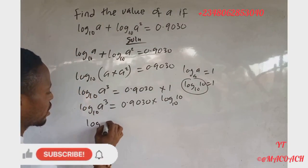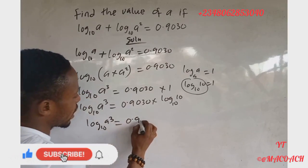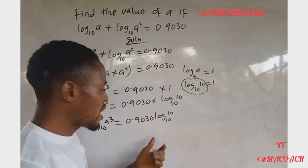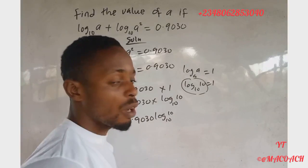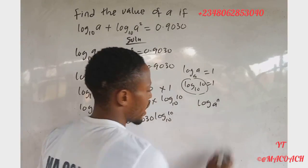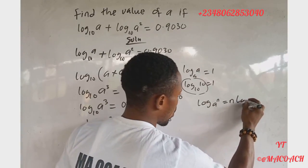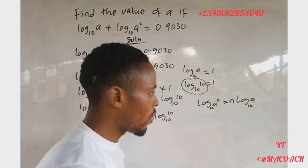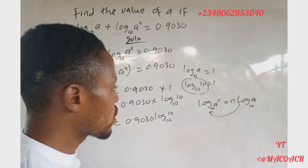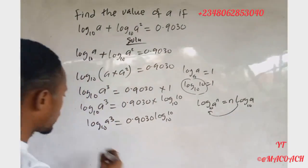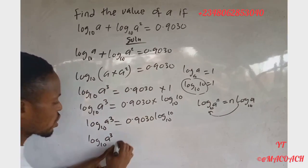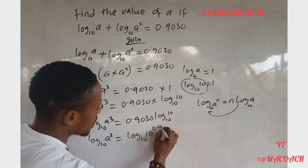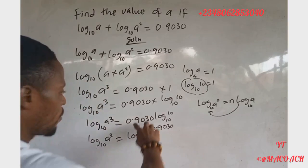So now this becomes: log base 10 of 'a' to the power three is equal to 0.9030 times log base 10 of 10. Now remembering the power law of logarithms, which states that log of a to the power n can be expressed as n times log of a, we apply this law to both sides.